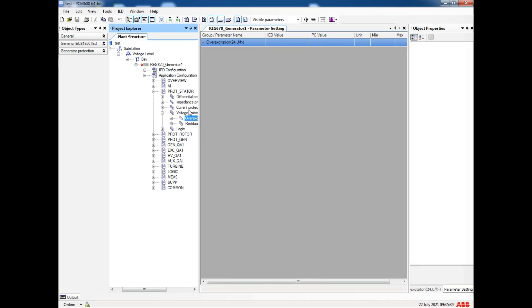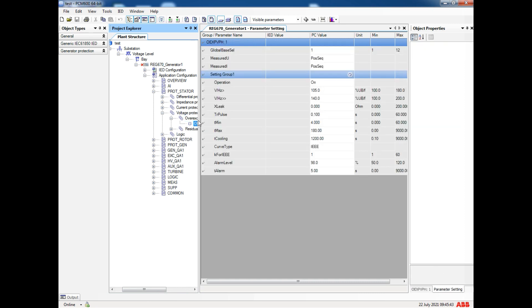Now we will see the relay settings. Here we have to note only a few parameters. The low set V/f Hz at single is greater than or equal to 110%, and high set is 140%. Here the curve type we are going to see is IEEE, and for this we have to see the K constant equal to 1.